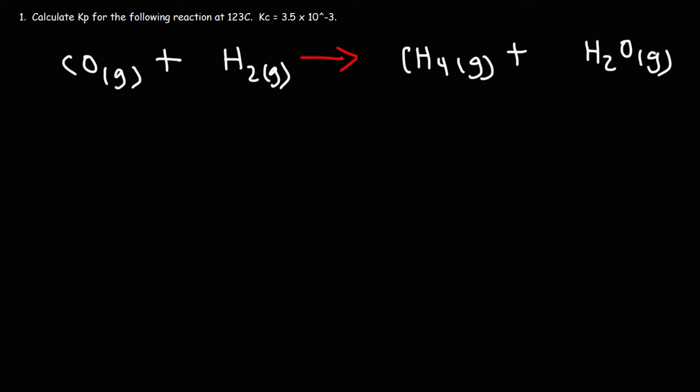In order to calculate the equilibrium constant for partial pressure, we could use this formula. Kp is going to equal Kc times RT raised to the delta N.